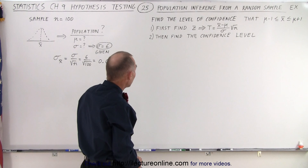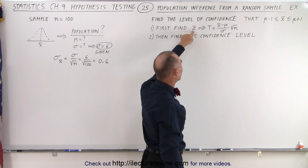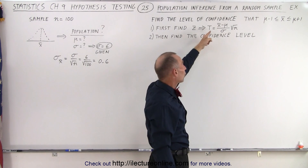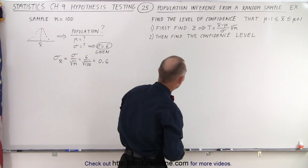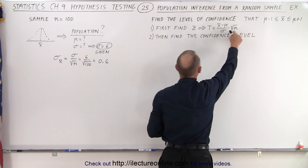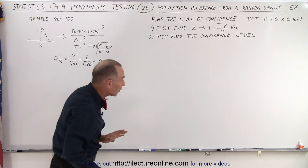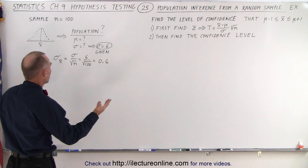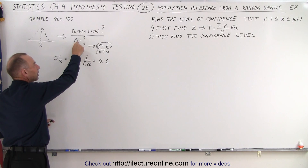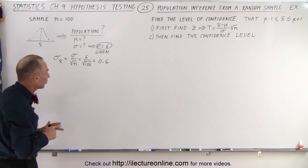There are two steps we need to take. First we need to find the Z value or Z score — in essence we want to find the test statistic — because we're dealing with the size of the sample, and then we want to find the confidence level after that. Now typically there are two things you wouldn't know about the population: one is you don't know the mean of the population, and the second is you don't know the standard deviation of the population.